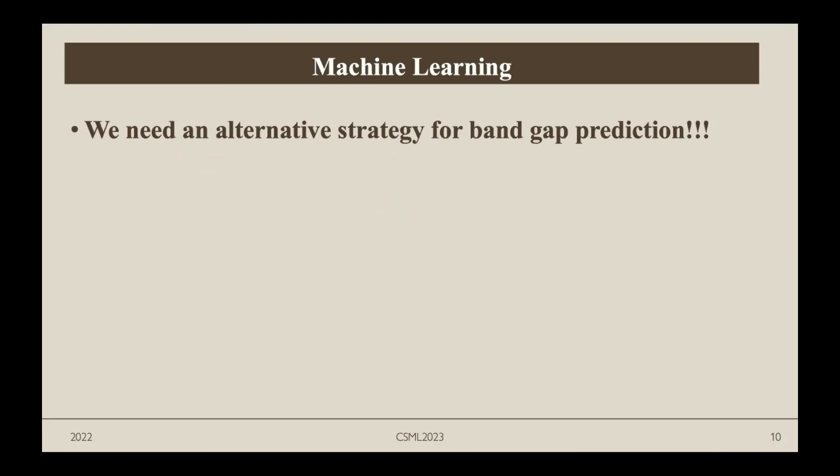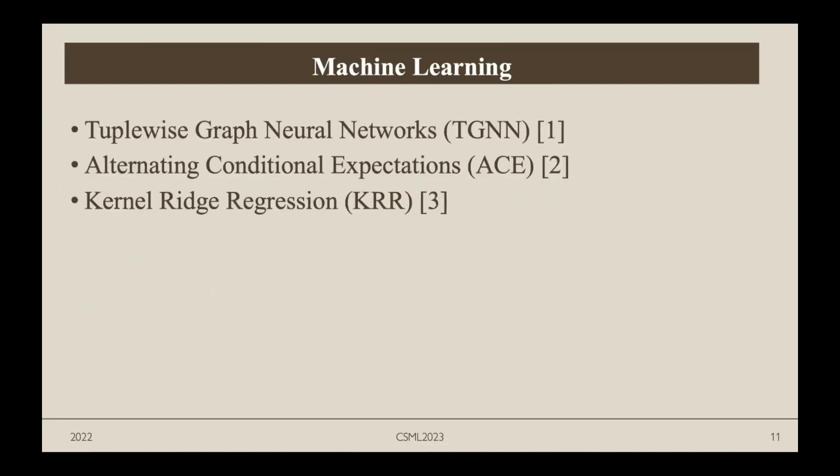There are many recent research topics that use machine learning to predict band gaps of different materials. For example, Tuplewise Graph Neural Networks automatically generate crystal representations using crystal structures to include crystal-level properties as input features. They predict the band gap of crystalline compounds, and results show higher accuracy than standard DFT. We also have Alternating Conditional Expectations, which uses a dataset of single perovskite materials with results comparable to using DFT only. Kernel Ridge Regression is usually used for prediction of band gaps of organic crystal structures.